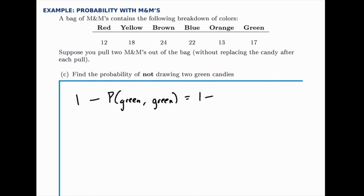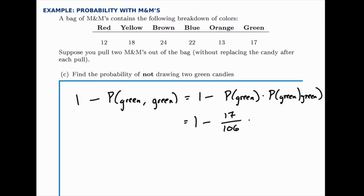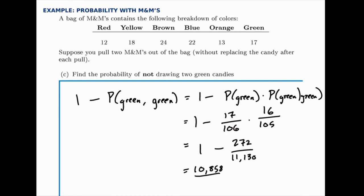So we'll have one minus the probability that you draw a green one first, times the conditional probability that you draw a green one second. There are 17 green out of 106, and then assuming that happened there will be 105 total of which 16 will be green. So this is 1 minus 272 out of 11,130, which works out to 10,858 out of 11,130, or about 97 to 98 percent.